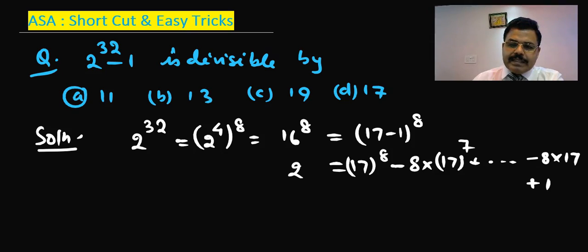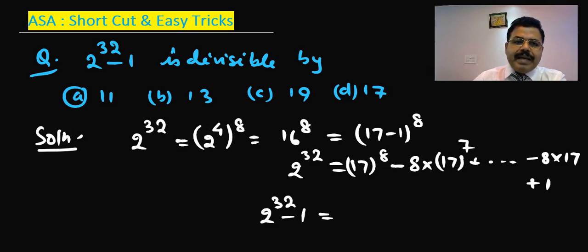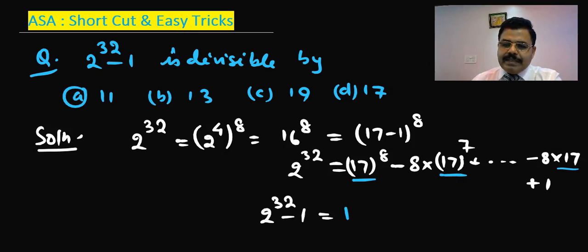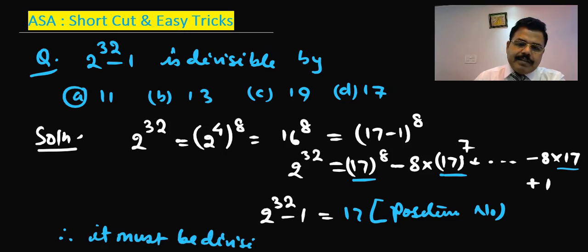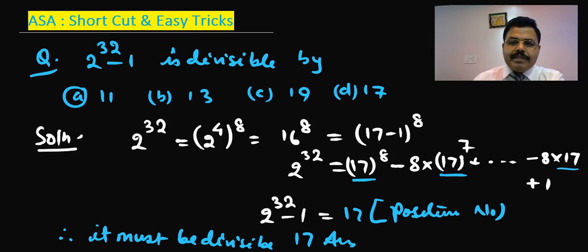So 2 to the power 32 is this expansion. If we bring the 1 to the other side, then 2 to the power 32 minus 1 gives us all the remaining terms, and every one of those terms has 17 as a factor — 17 times some positive number. Therefore, 2 to the power 32 minus 1 must be divisible by 17. So 17 is a factor and option D is the most appropriate answer.